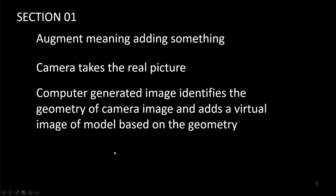The word 'augment' means to add something. When we use augmented reality software, we use a camera to take a real picture. The computer then identifies the geometry of that real picture, and based on the geometry, it places our virtual image — that is, a 3D model — on the real picture, and we see the composite view.